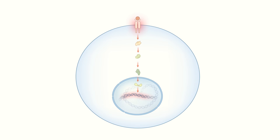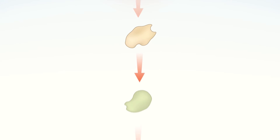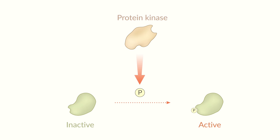A central element of these signaling cascades are protein kinases. Protein kinases are enzymes that transfer a phosphate group onto a target protein, thereby changing protein function from inactive to active.